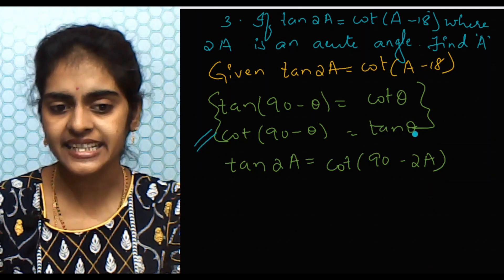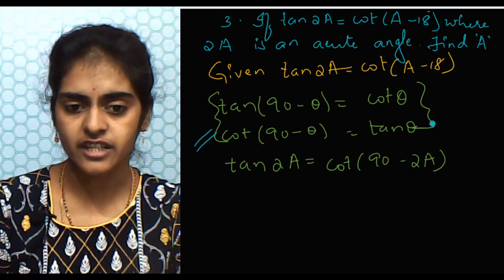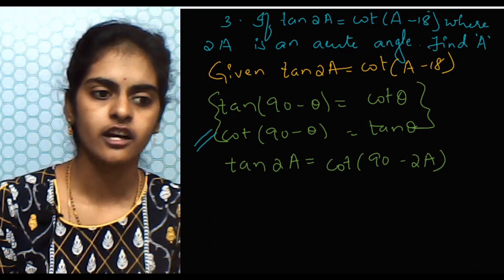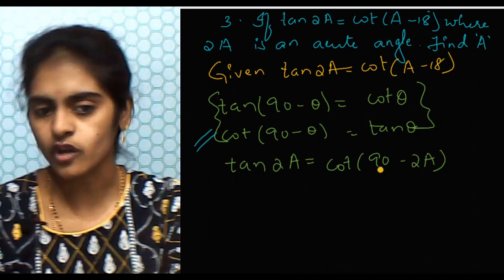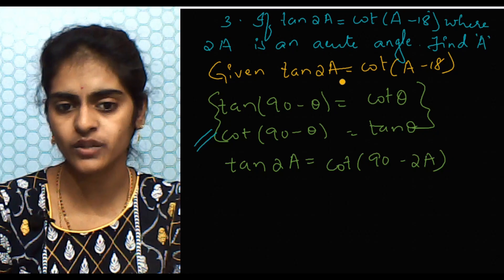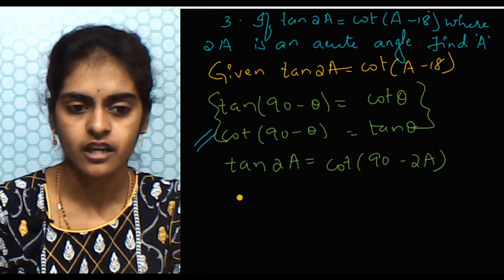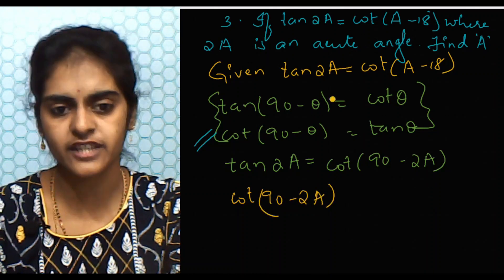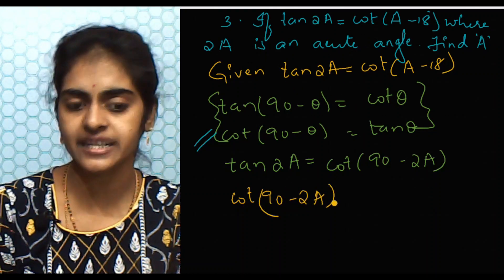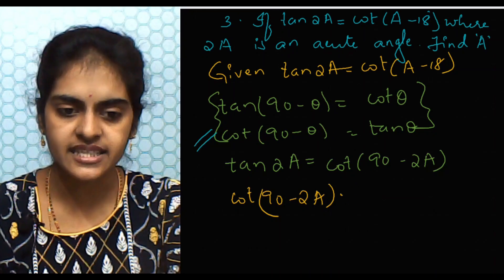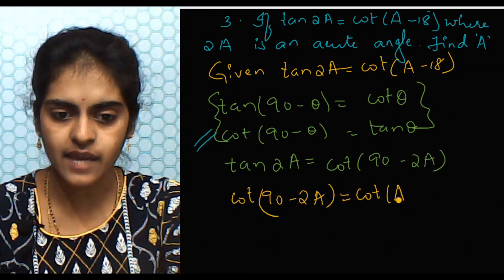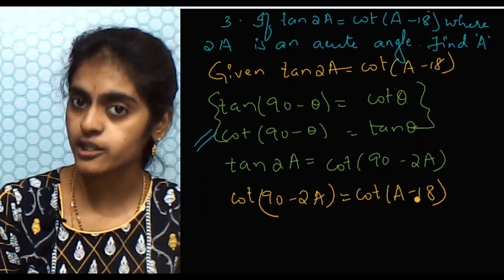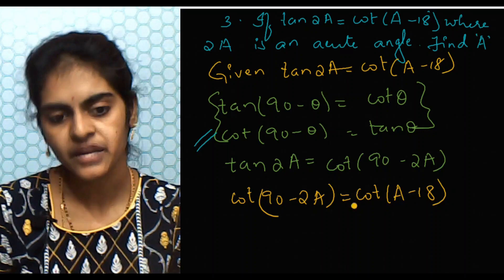Using tan θ = cot(90 − θ), with θ = 2A, we get tan 2A = cot(90 − 2A). Substituting in place of tan 2A, we write cot(90 − 2A) = cot(A − 18). Now both sides are cot ratios.